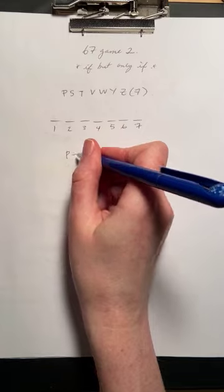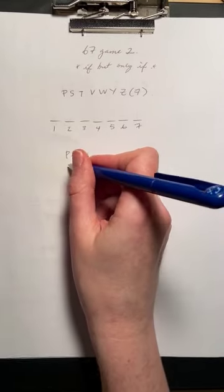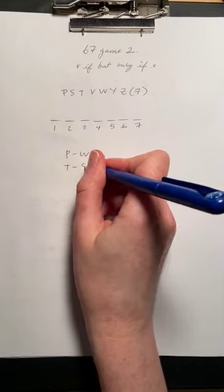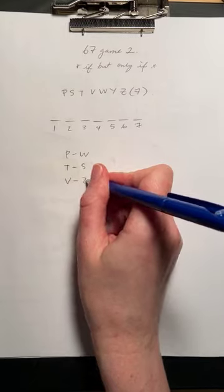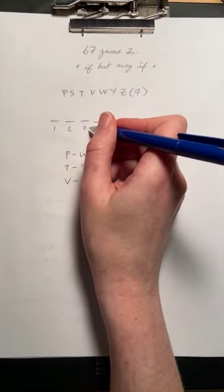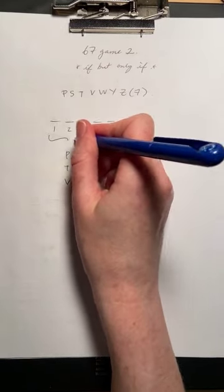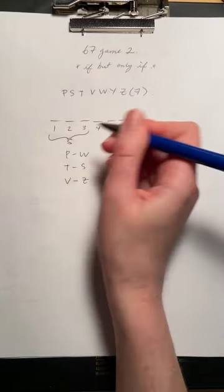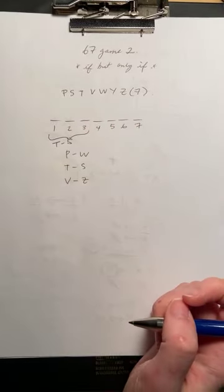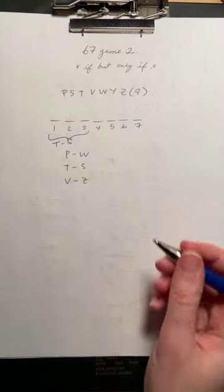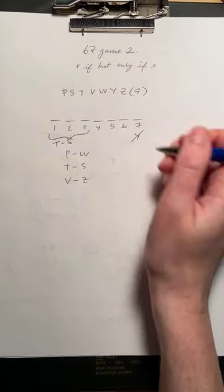P lectures before W, T before S, V before Z, S no later than 3rd, so S is somewhere in the first three, which means T is one of the first two, and Y is not 7th.